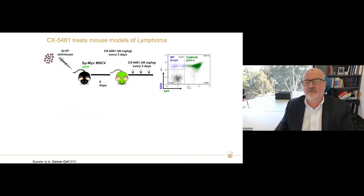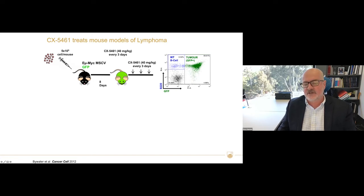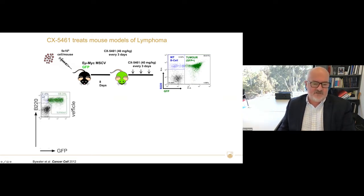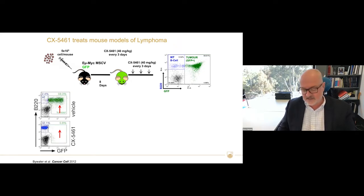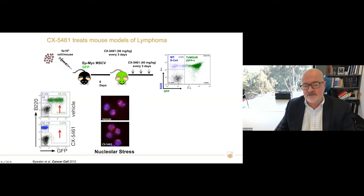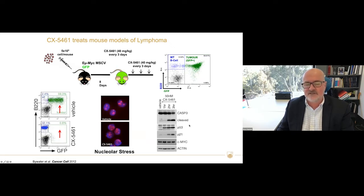In the Eµ-MYC model, we adoptively transfer MYC-driven lymphoma cells into mice, which get diseased very rapidly within eight days. With vehicle there is no effect, but a single dose of CX5461 completely eradicates the tumor cells while normal cells come back. Very surprisingly, you can target one of the most basic housekeeping processes of a cell — the synthesis of non-coding ribosomal RNA — and get selectivity for killing tumor cells. This leads to nucleolar disassembly and rapid activation of P53 within one hour, and apoptosis starting within three hours. This is a rapid response, not a slow response to the loss of ribosomes.